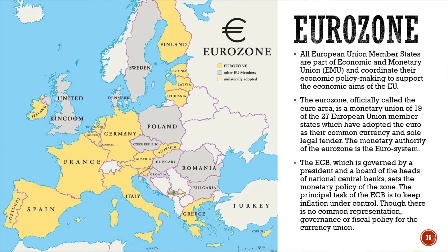A major treaty is the Maastricht Treaty — the Treaty of the European Union — which came into place in 1993. It was intended to prepare the European Monetary Union and introduce elements of a political union, including citizenship and common foreign and international affairs.